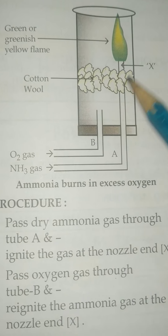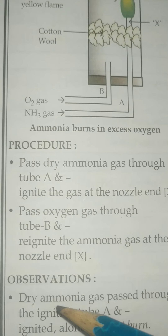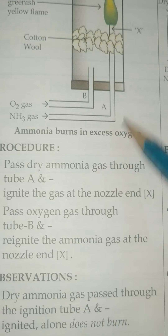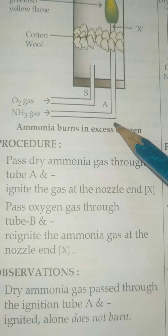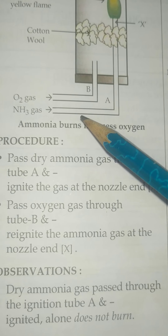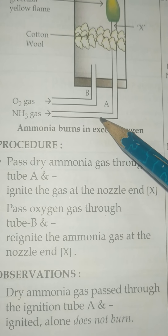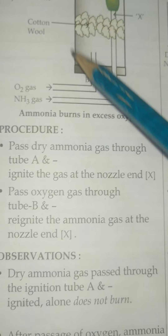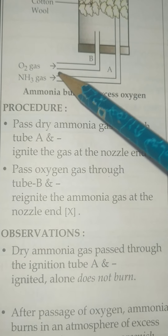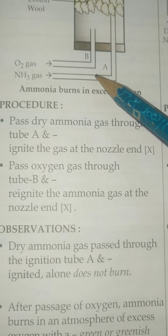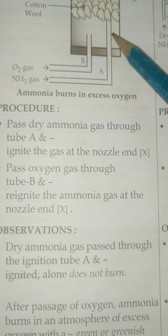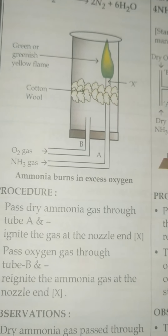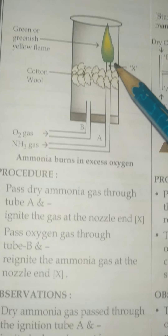When dry ammonia gas is passed through the ignition tube A and ignited, it does not burn. But when we pass oxygen, ammonia burns in an atmosphere of excess oxygen with a greenish-yellow flame.